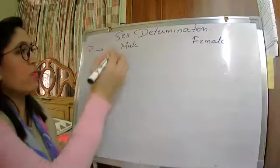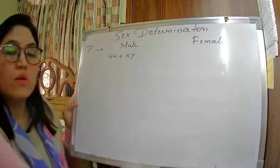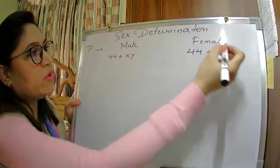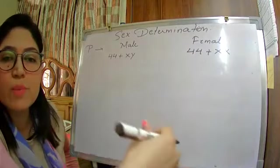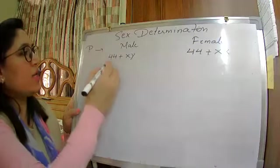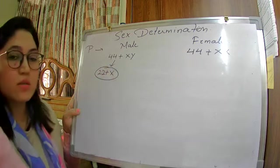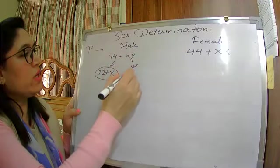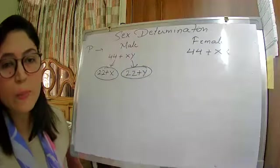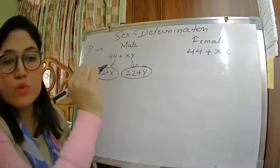The nature of chromosomes in male is 44 + XY, and in female it is 44 + XX. What type of gametes can be formed from the male? It can be 22 + X, or it can be 22 + Y. After meiosis, when gametes are formed, there will be half the number of chromosomes, that is why I have written 22.